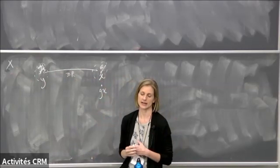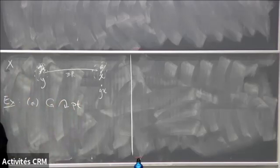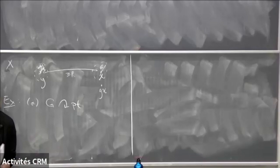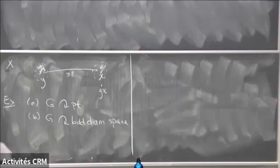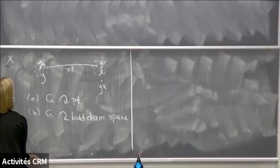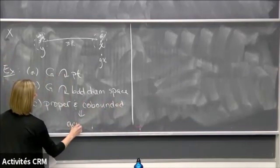What are some examples of acylindrical actions? There are some trivial examples. Any group acting on a point is acylindrical — you just need to find two points at distance at least R apart, but no two such points exist, so the definition is vacuously satisfied. By the same reasoning, any group acting on a bounded diameter space is acylindrical: choose R greater than the diameter and the definition is vacuously satisfied. More generally, any action that is both proper and co-bounded implies that the action is acylindrical. On the other hand, it is possible to have a proper action that is not acylindrical.